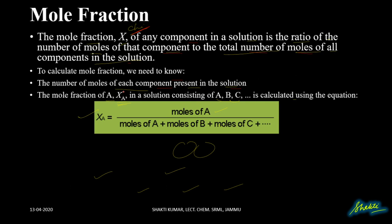The mole fraction chi A in a solution consisting of A, B, and C is calculated using the equation: chi A equals moles of A divided by the sum of moles of A, moles of B, and moles of C.